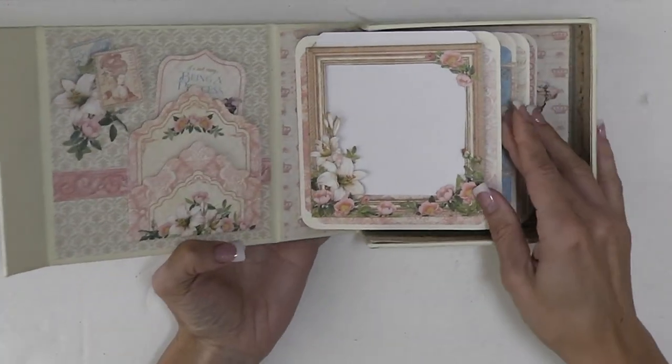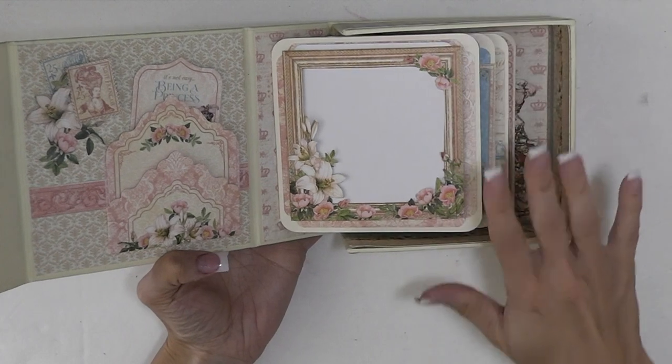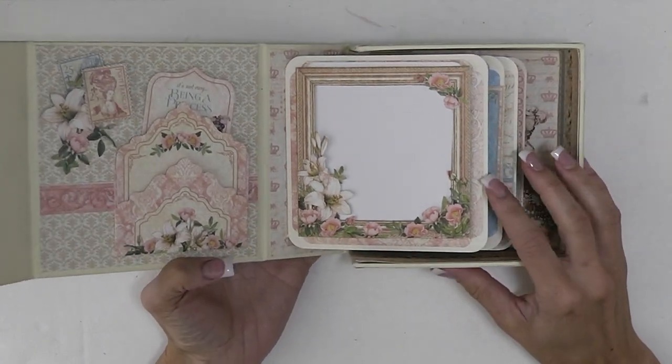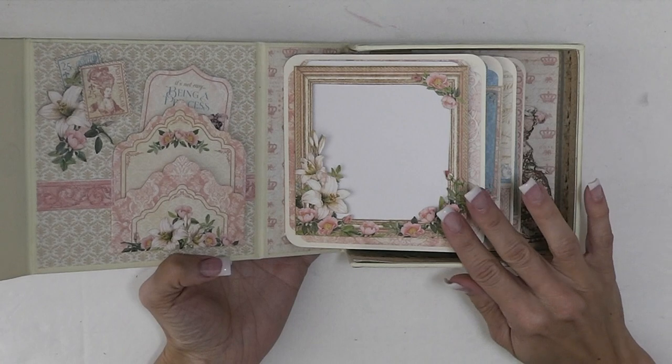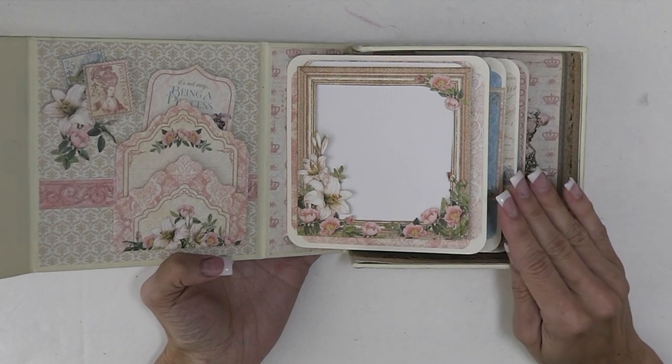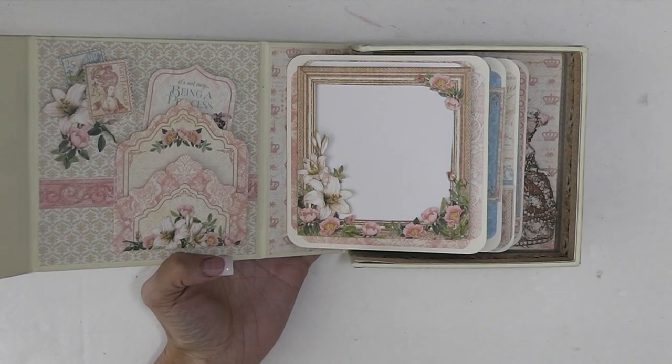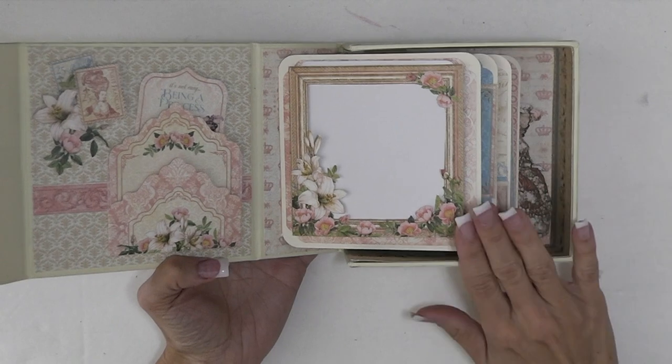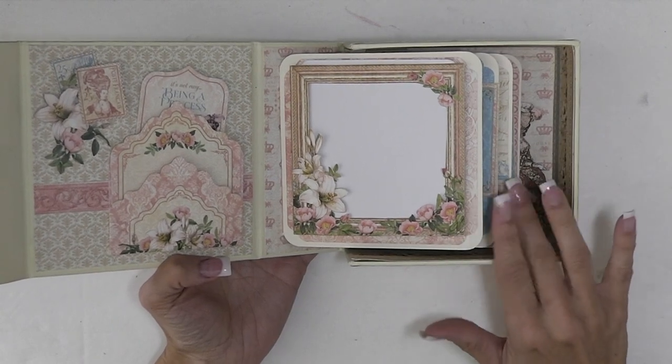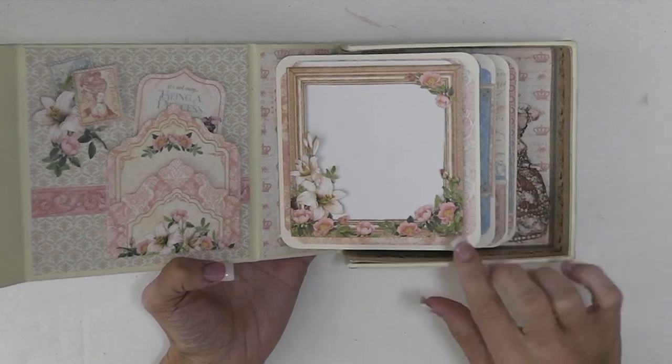And then here we have the first page. Each of these boxes come with 6 tags. And so for my mini albums, this one and the Raining Cats and Dogs, I used 4 of the tags and then I had 2 left over. So for this album I did use all 6 but I still have 4 pages. And I'll show you later what I did with them.